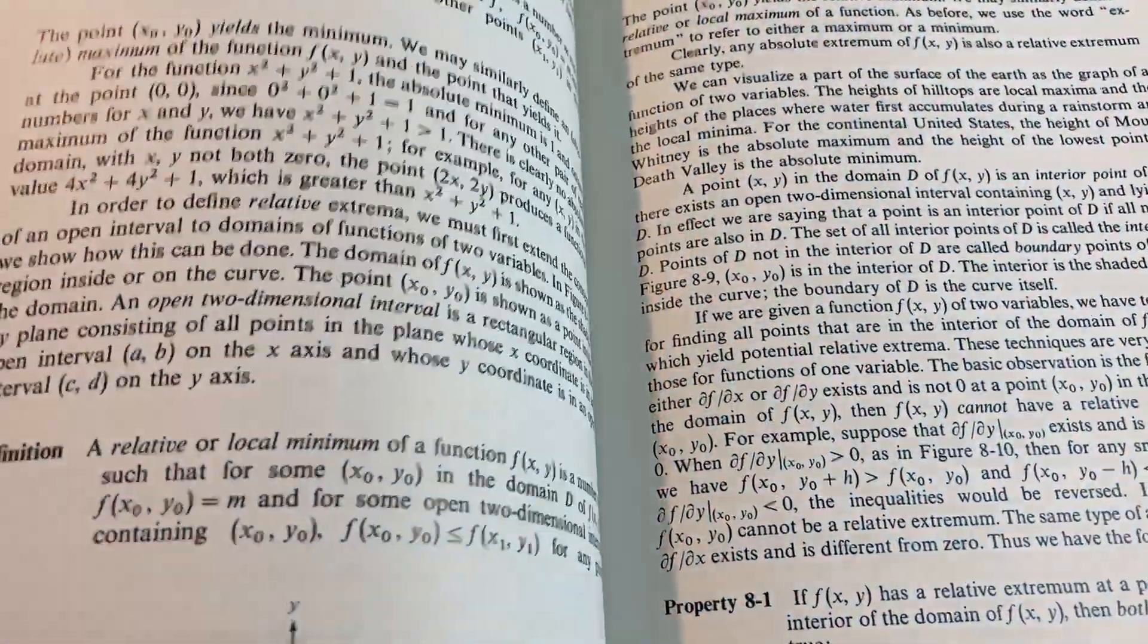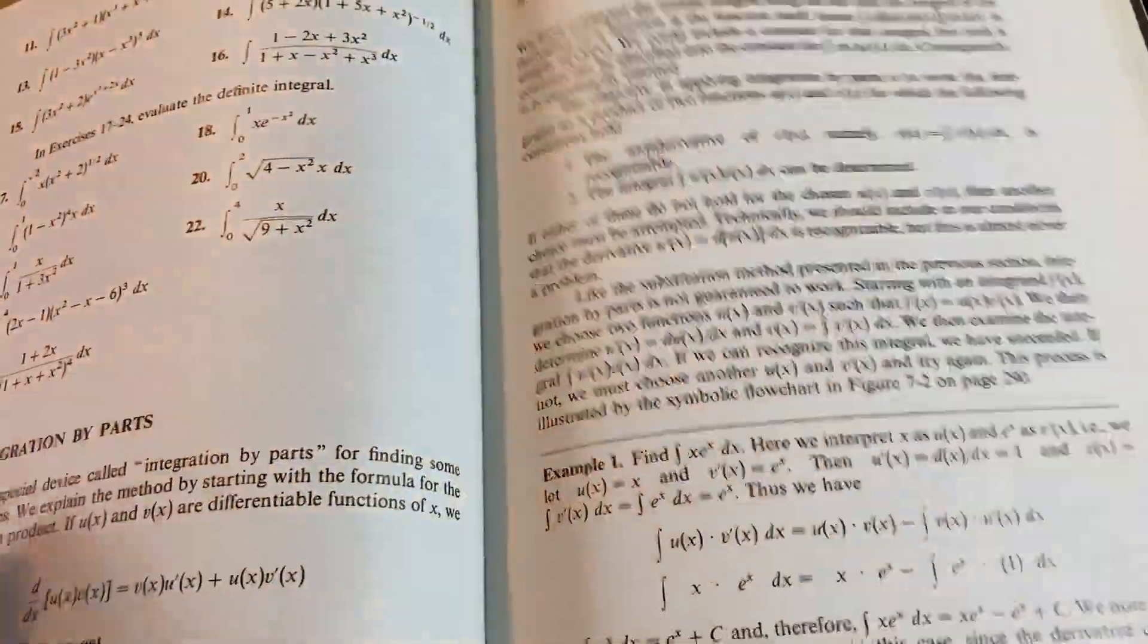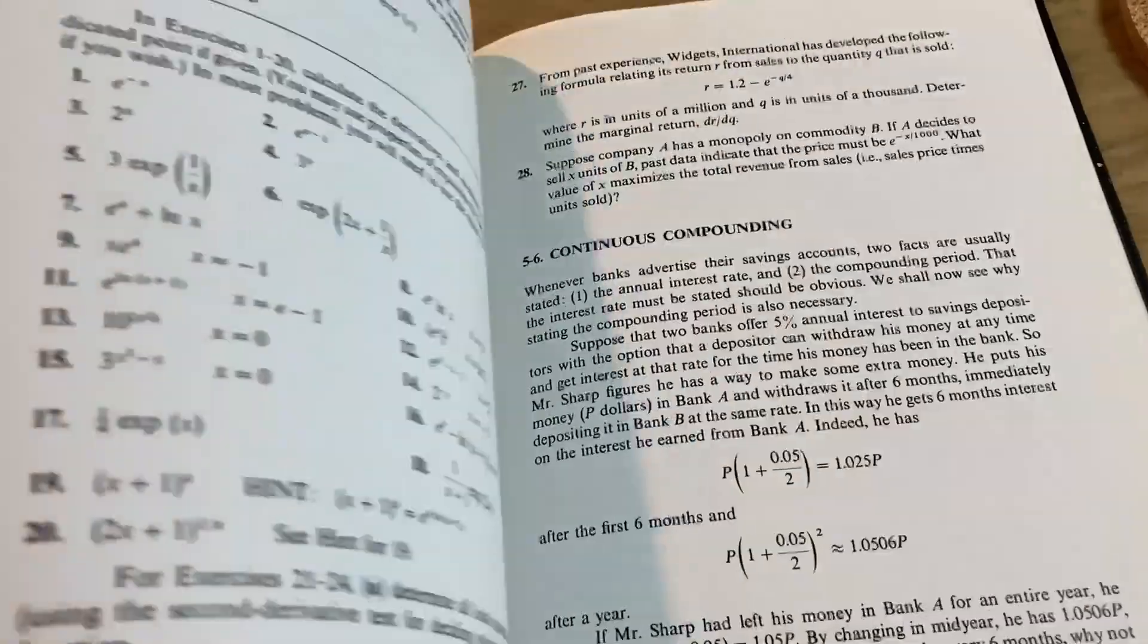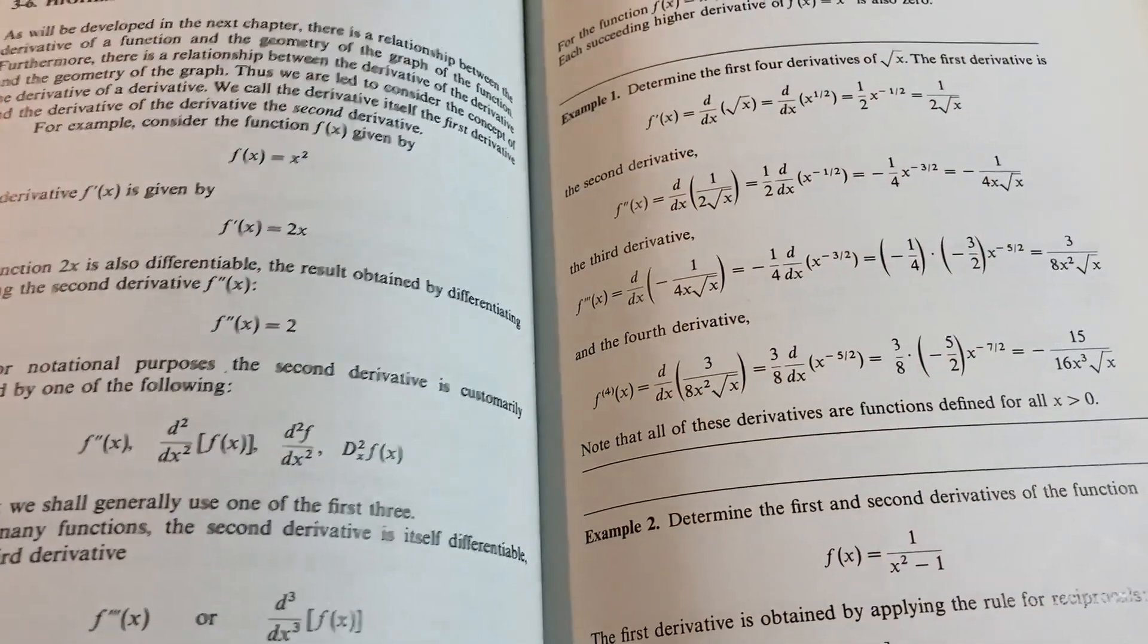At the same time, you do have some harder examples. For example, the section where he discusses maxima and minima and concavity is pretty detailed compared to some of the other books. So yeah, you just get a good mix with a book like this.